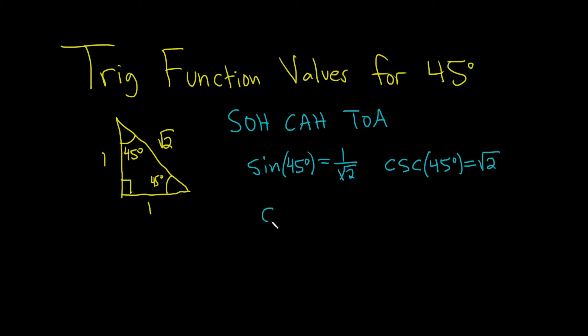Let's do cosine now. Cosine of 45 degrees is adjacent over hypotenuse. The adjacent to this 45 degree angle is 1, hypotenuse is the square root of 2, same thing.